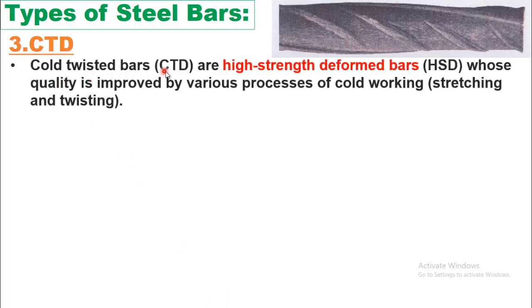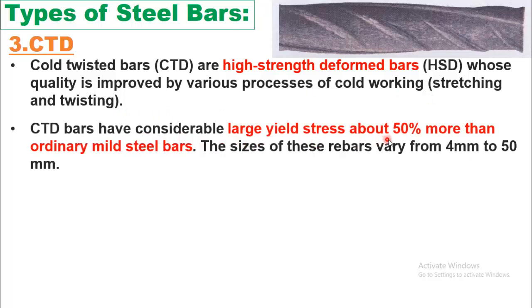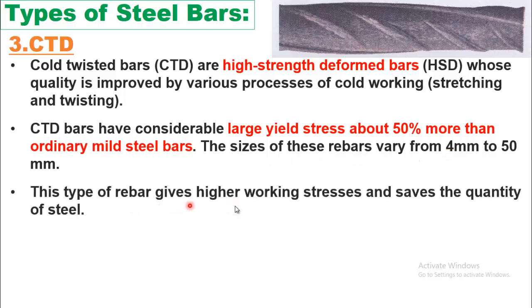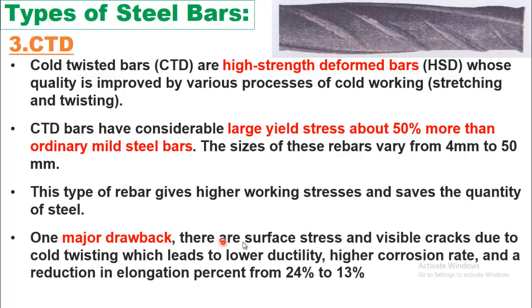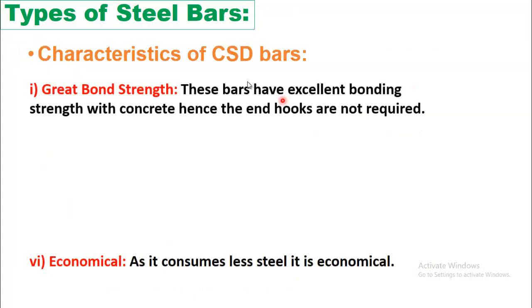The third type is CTD — cold twisted deformed bars, also known as high strength deformed (HSD) bars — whose quality is improved by cold working processes of stretching and twisting. CTD bars have yield stresses about 50% more than ordinary mild steel bars. Sizes range from 4mm to 50mm, giving higher working stresses and saving steel. One major drawback is surface stresses and visible cracks from cold twisting, leading to lower ductility, higher corrosion rate, and reduction in elongation from 24% to 13%.